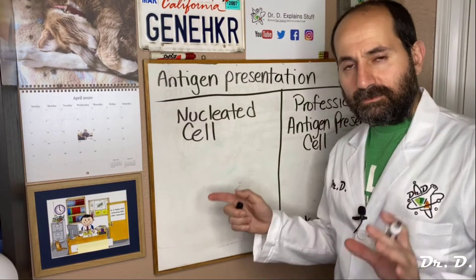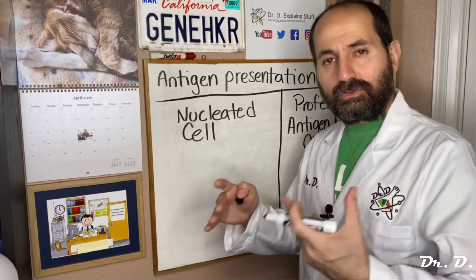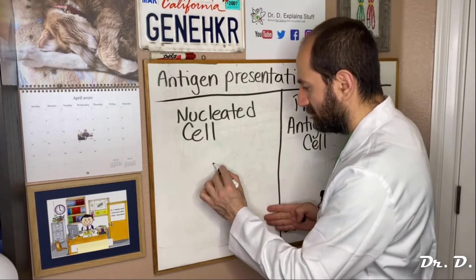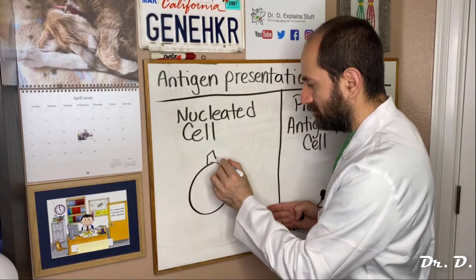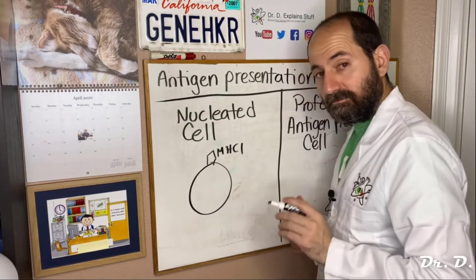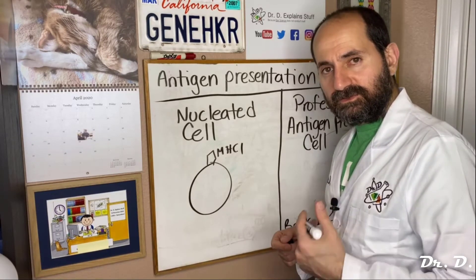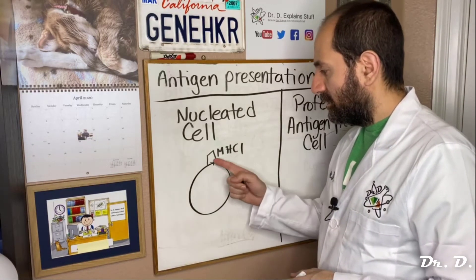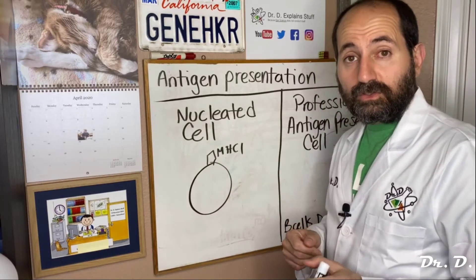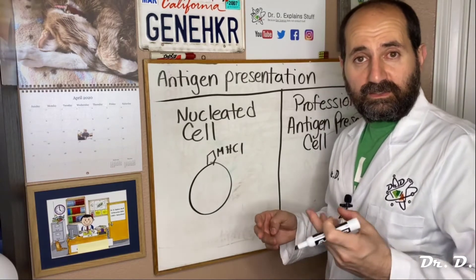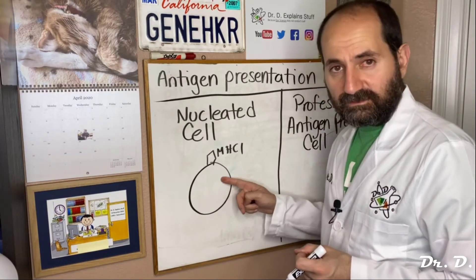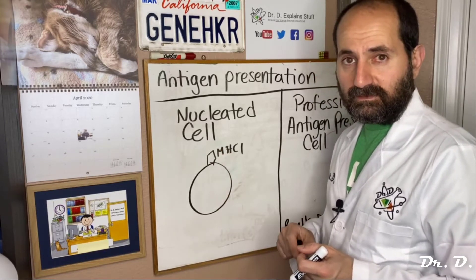Let's start with your normal nucleated cells. Remember, those cells have MHC1 — major histocompatibility complex 1 — on their surface. What is the importance of that? MHC molecules are like trophy cases. MHC molecules can bring antigen from inside of the cell and present it outside.